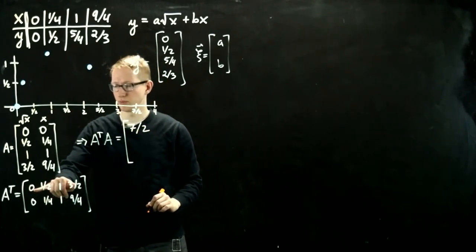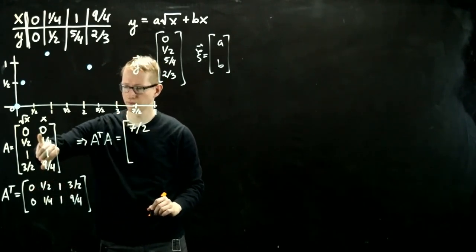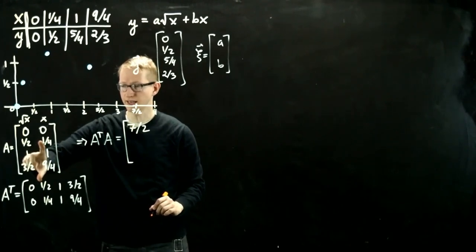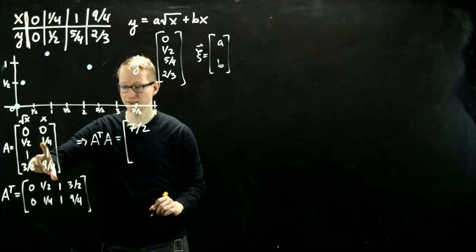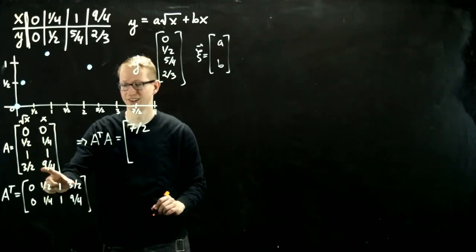Then we take the dot product of this vector with this one. So this gives us 1 eighths plus 1, so that's 9 eighths. And then, unfortunately, we have 27 eighths.